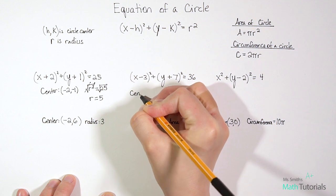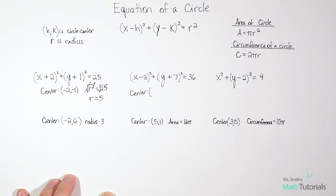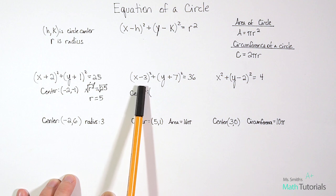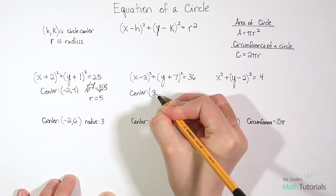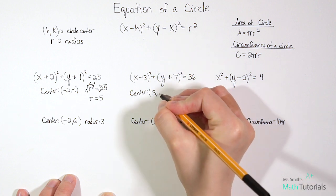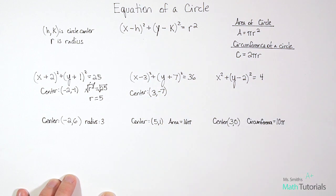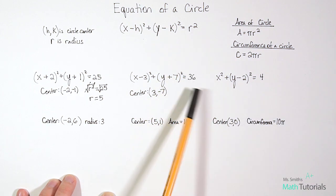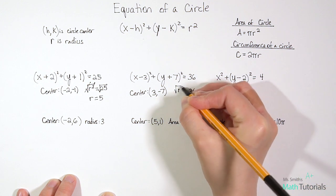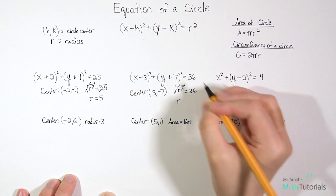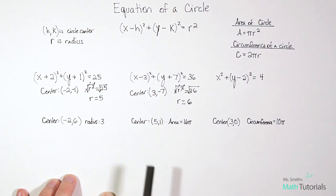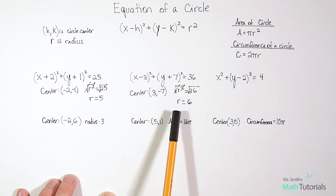Let's do another one together. For the center, my x-value is my h — what's in the place of h is negative three, but we need the opposite sign, so it's positive three. Then k is my y-value, and what's in the place of k is positive seven, so we need the opposite: negative seven. My r² is 36, so we take the square root of both sides. The square root of 36 is 6. So my center is (3, -7) and my radius is 6.